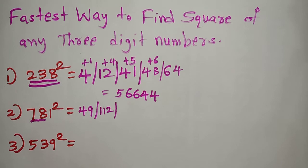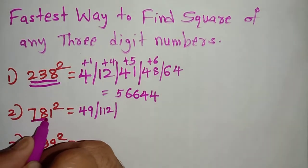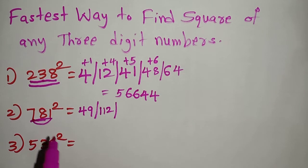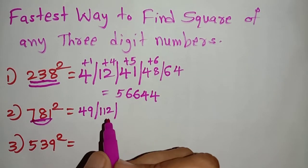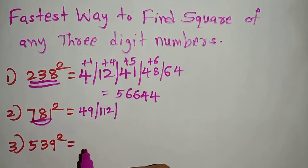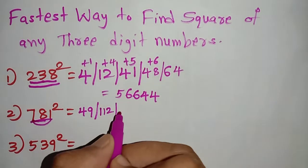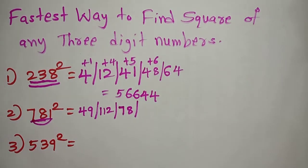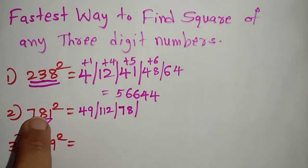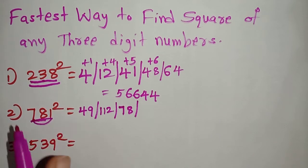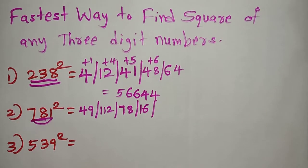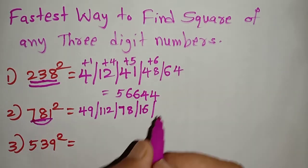The next part is the duplex of the first three digits 7, 8, 1. We multiply 7 into 1, which is 7, then into 2 to get 14. Then we add the square of the middle number: 8 squared is 64. 64 plus 14 is 78. Next part is the duplex of the last two digits, 8 and 1: 8 into 1 is 8, into 2 is 16. And the last step is the square of the last number: 1 squared is 1.